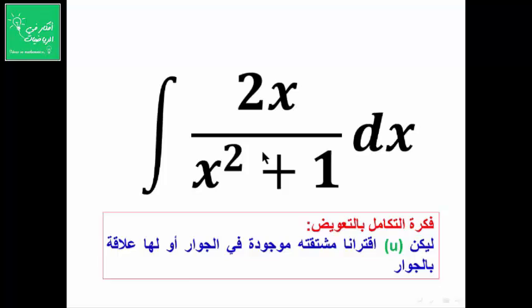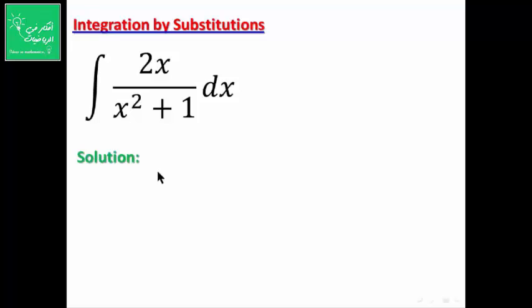اختيارك لـ u يمكن أن يكون مثلاً u = 2x أو u = x² + 1. بعد الاشتقاق والعودة للتكامل، إذا صار شكل التكامل أبسط من المسألة فأنت في الاتجاه الصحيح. أما إذا تعقّد أكثر فاختيارك خاطئ وعليك تغييره. الآن نفرض u = x² + 1.